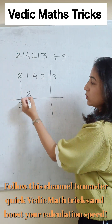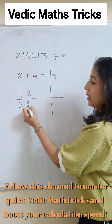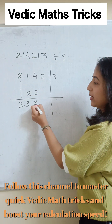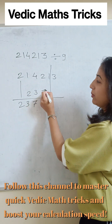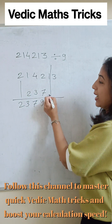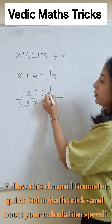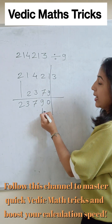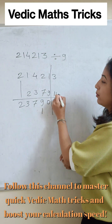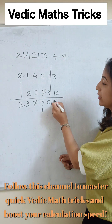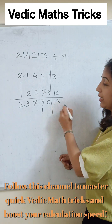Now 2 plus 1 is 3. 3 plus 4 is 7. 7 plus 2 is 9. 9 plus 1 is 10, and 10 plus 3 is 13.